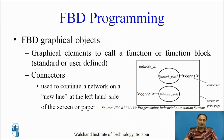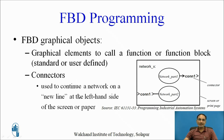Next are the graphical objects used to call a function or a function block. You have standard function blocks, or you can define your own function block depending on your requirement. These elements are represented by square boxes with inputs and outputs. The fourth object is connectors, which are used to continue a network on a new line on the left-hand side of a screen or printed page. The connector on the right is an output connector, whereas the connector on the left is an input connector.